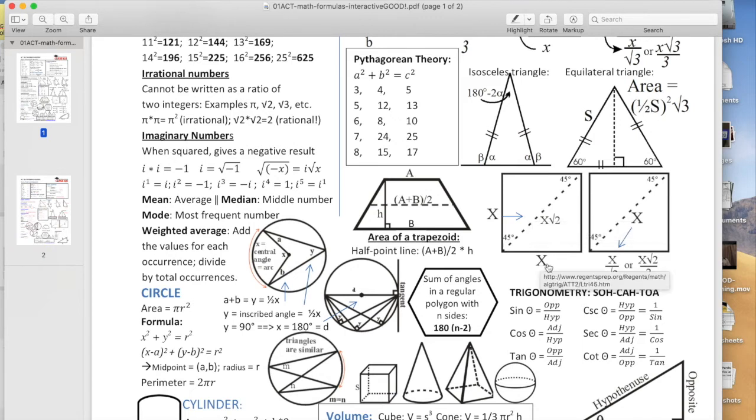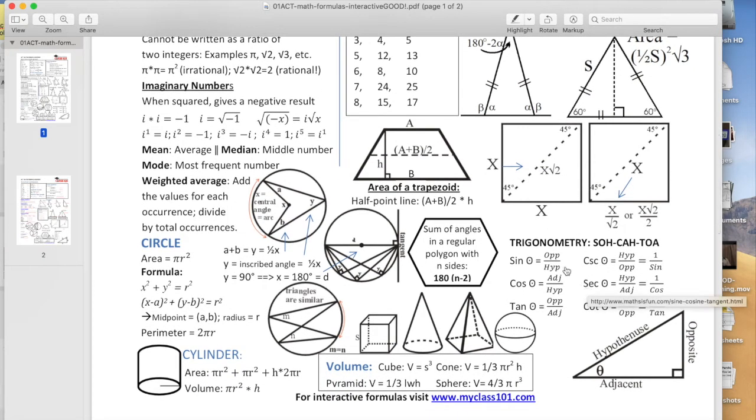A 45-45 is 1, 1, square root of 2. Very common again. SOHCAHTOA. If you haven't, you'll see the other videos in my playlist for SOHCAHTOA. But you're going to see problems on SOHCAHTOA. 2 or 3 or 4, depending on the type of test.